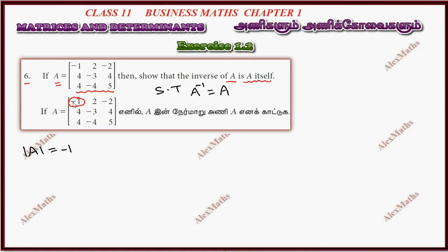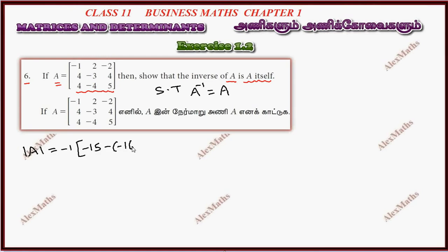The first element is minus 1. We cut the corresponding row and column. This leading minor gives minus 15. We follow the sign convention — plus, minus, plus. Following the sign convention, the next element is minus 2.